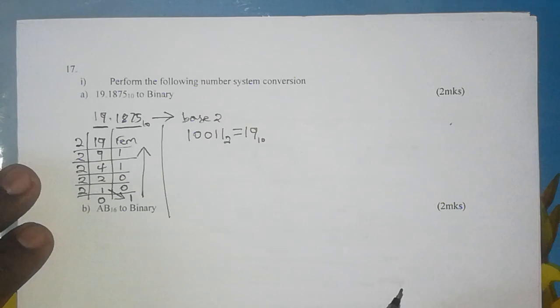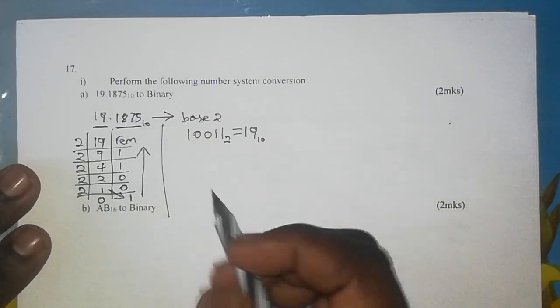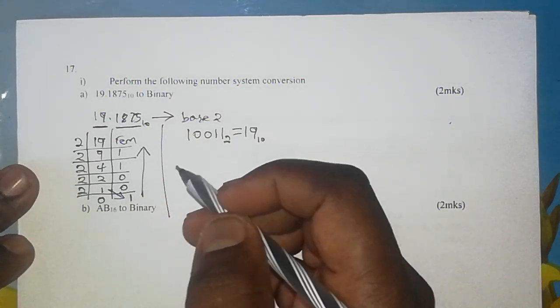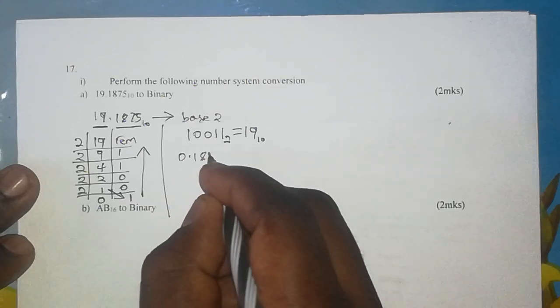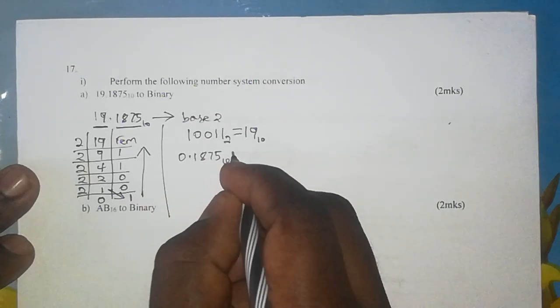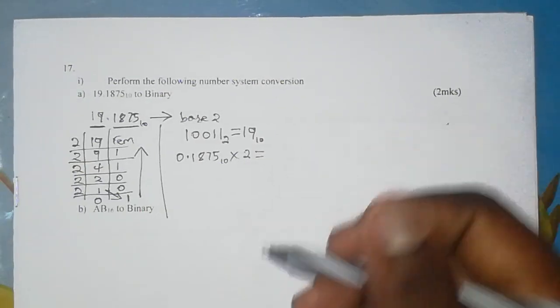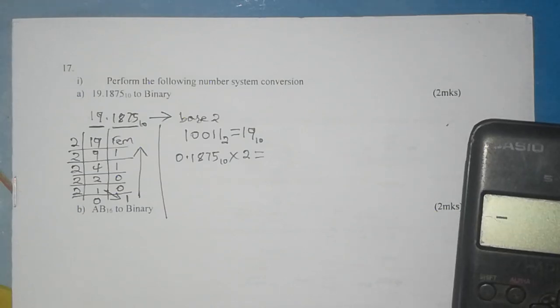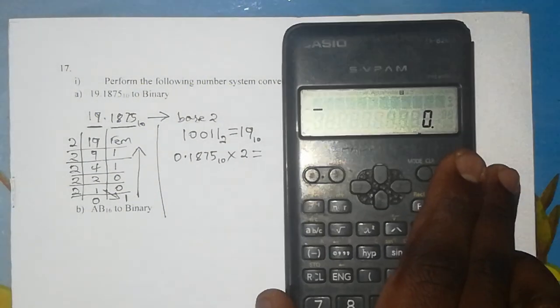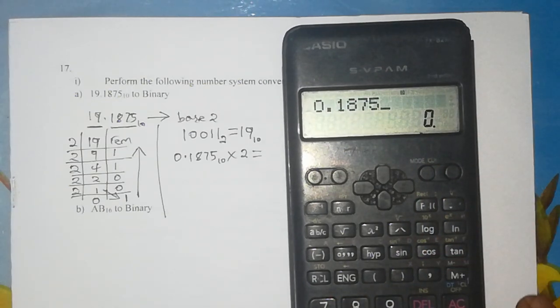So that is our first part of the answer. Now we proceed to work out the fraction part, and the fraction part is done by multiplication as opposed to division. So we take 0.1875 base 10, we multiply repeatedly by 2, and we are going to be taking note of the whole number part of the products. So grabbing our calculator, we get the product of 0.1875 times 2, and the answer is 0.375.